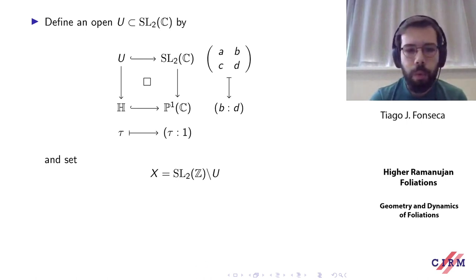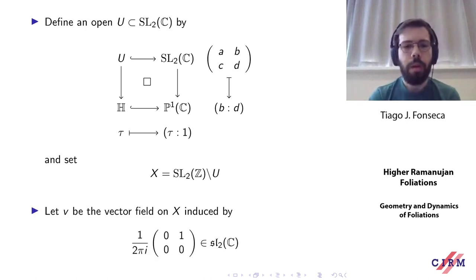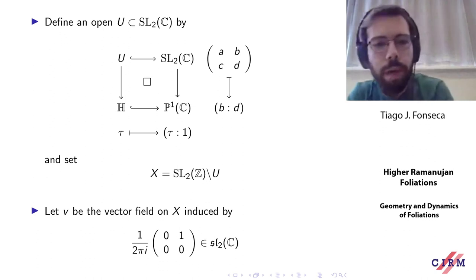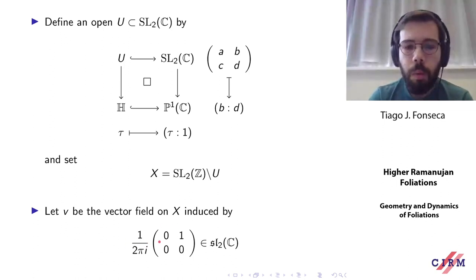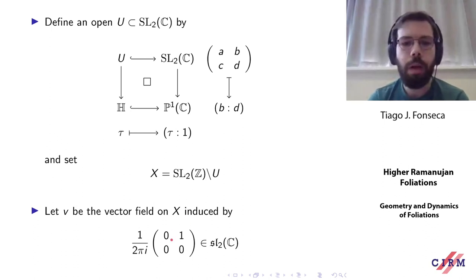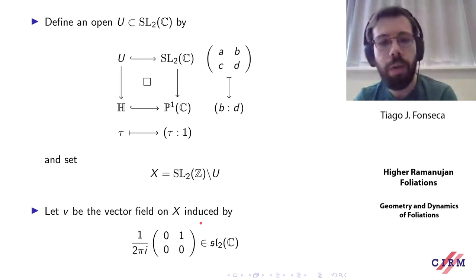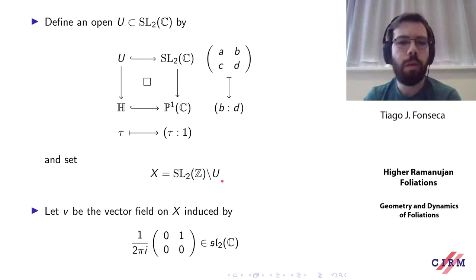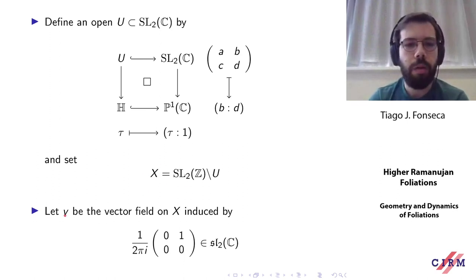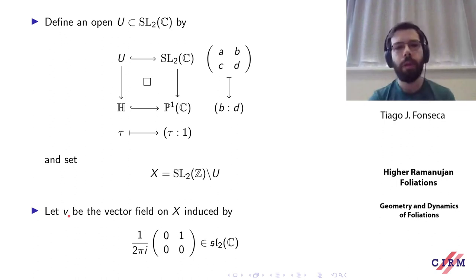Over this manifold we consider the vector field given by the element (0,1,0,0) in the Lie algebra of SL2(C) — you can forget the normalization. This extends to a left-invariant global vector field on SL2(C), which we restrict to our open subset U, and then this descends to the quotient X, giving a holomorphic vector field v on X.